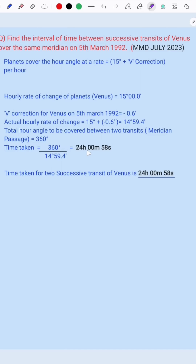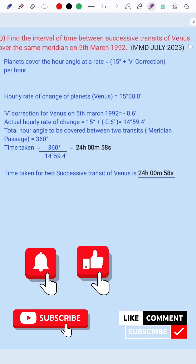This equals 24 hours 00 minutes 58 seconds. Therefore, the time taken for two successive transits of Venus is 24 hours 00 minutes 58 seconds. I hope you have understood this sum. Thank you for watching.